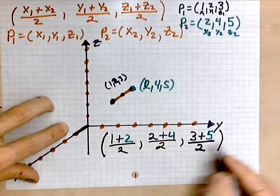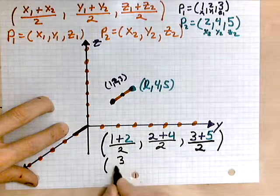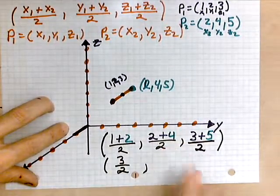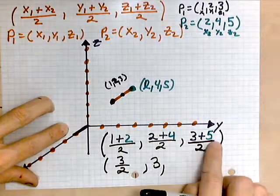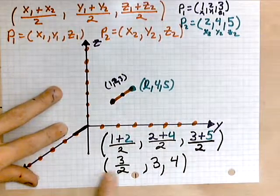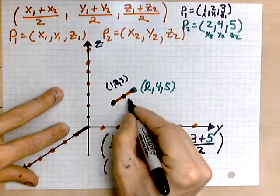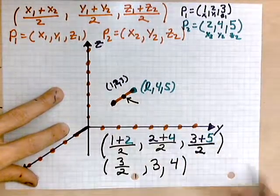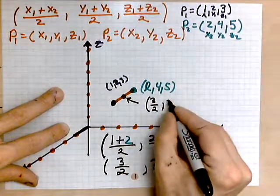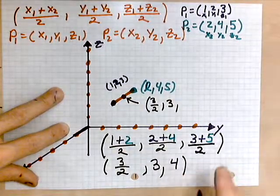So let's simplify this. So 1 plus 2 is 3, so this ends up being 3/2. 2 plus 4 is 6, 6 divided by 2 is 3. 3 plus 5 is 8, 8 divided by 2 is 4. And these are the coordinates of our midpoint. So if we were to label the point here, it would be labeled as 3/2 for x, 3 for y, and that's reasonable, and then lastly, 4 for z.